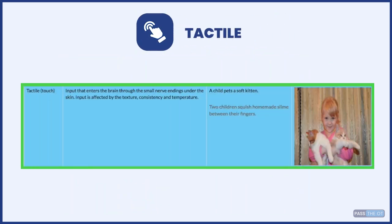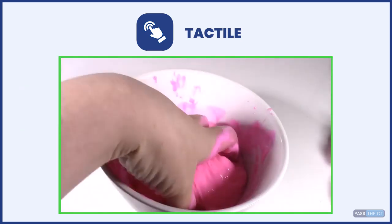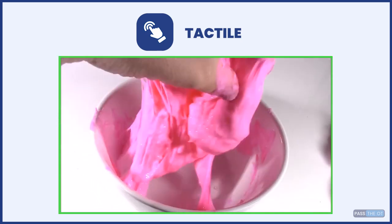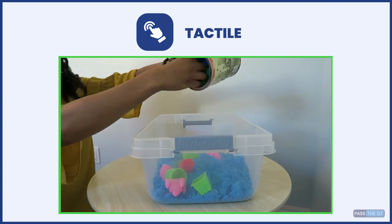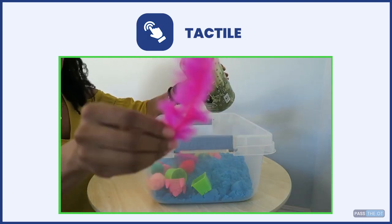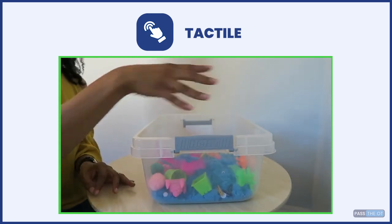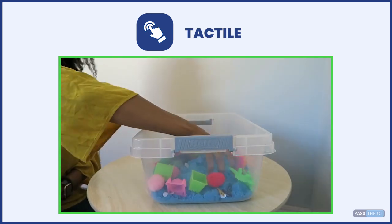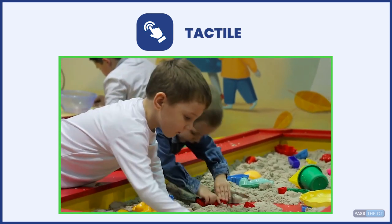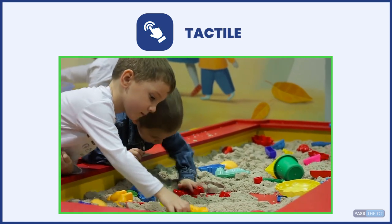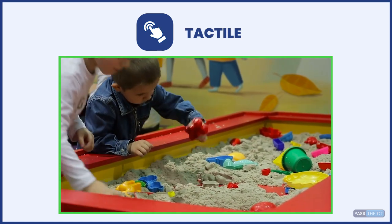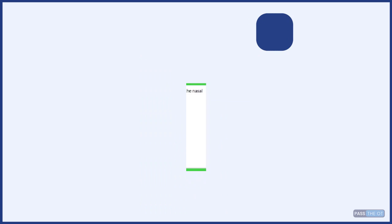Next is tactile, which is touch. In this photo, this little girl is cuddling two adorable kittens. If you touch something slimy or squishy, that really feels good to the hands and fingers. People get tactile input through small nerve endings under the skin, experiencing different feelings from texture, consistency, and temperature — whether it's hot or cold.